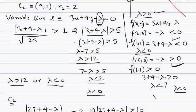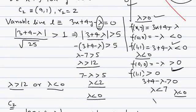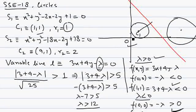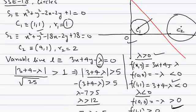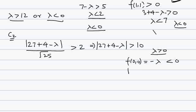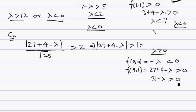Now, as both circles should lie on opposite sides of the line, origin and C1 lie on the same side, whereas origin and C2 should be on different sides of the line. So if the sign of origin is negative, the sign of the second center at (9,1) — that is, 27 plus 4 minus lambda — should be greater than zero. That is, 31 minus lambda should be greater than zero, meaning lambda less than 31.